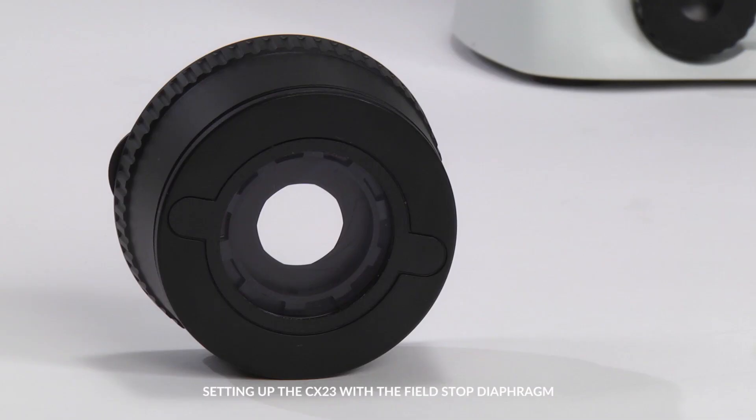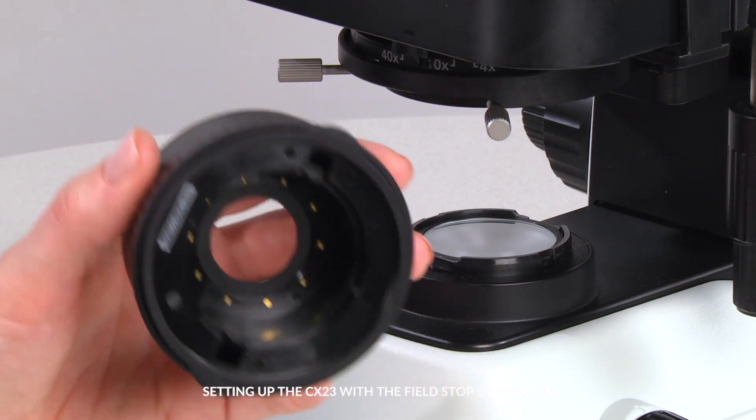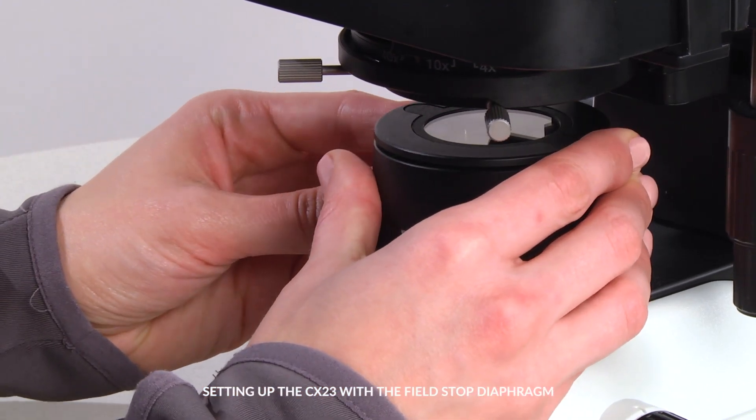Next, insert the field diaphragm by aligning the notches found on the unit with the notches on the LED illumination window. Gently press down on the field diaphragm unit until it clicks.